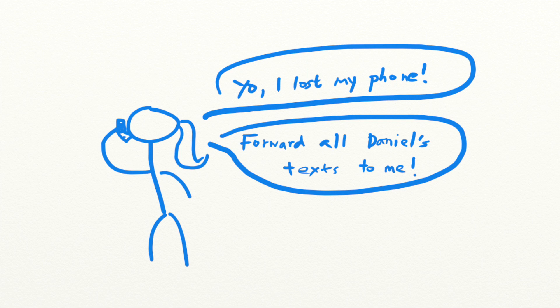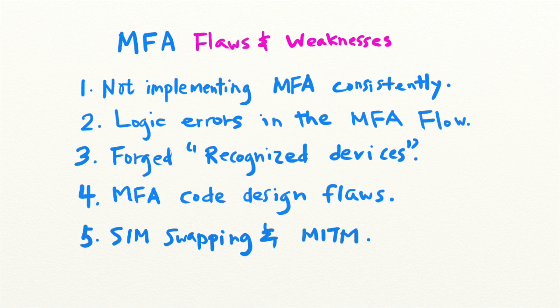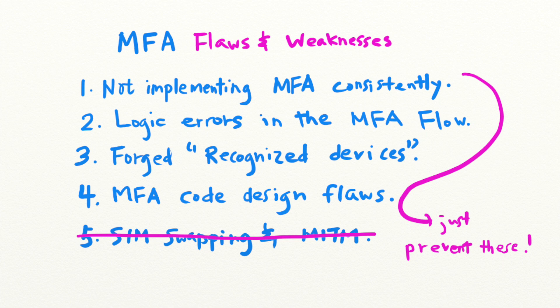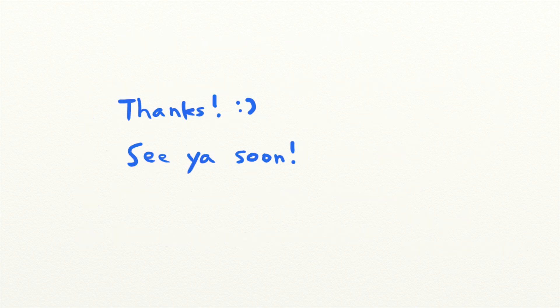Finally, attackers can also bypass MFA by launching a man-in-the-middle attack or by spying on the victim's internet traffic. But these attacks tend to be highly targeted and are not that common for the regular user. So by implementing MFA on your application whenever possible, it's still a safe bet to protecting your users' accounts. But MFA only adds to the security of your application if it is implemented correctly. And that's it for today's security lesson. Thanks for watching.